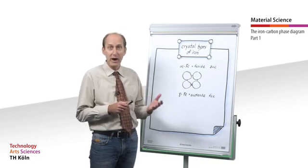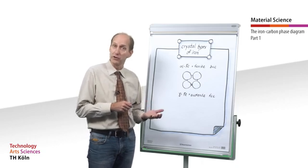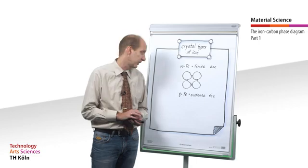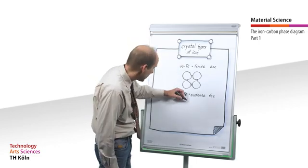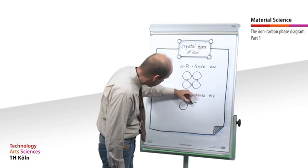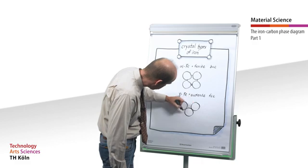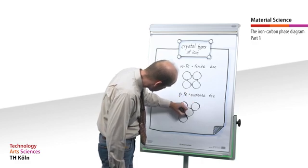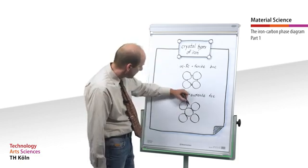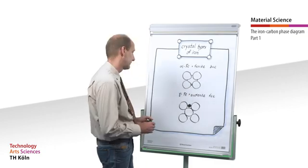This explains why the maximum solubility of carbon in ferrite is only up to 0.02%, but in austenite up to 2.06%. To illustrate this, we can draw the face-centered cubic lattice and see that it has much larger vacancies.